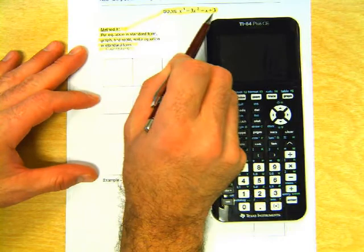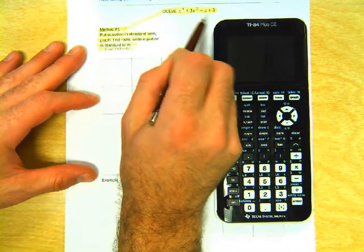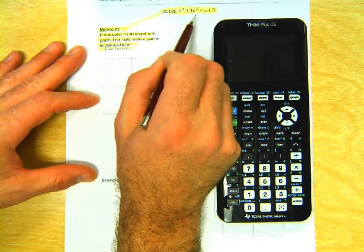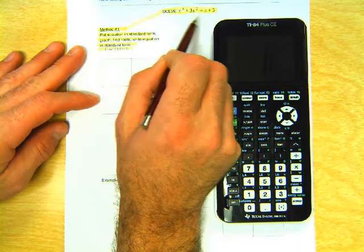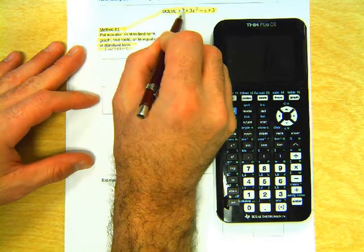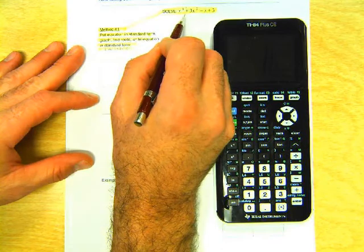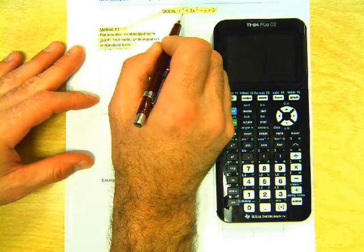So we want to solve this equation, which is x cubed plus 3x squared equals x plus 3. So one of the things that we could do is we could put this in standard form, we could graph it, we could find the rational roots, and if it's third degree, so if we have three rational roots, we're done, and if not, then we could find the irrationals or the imaginaries.